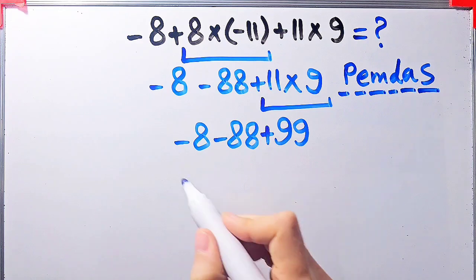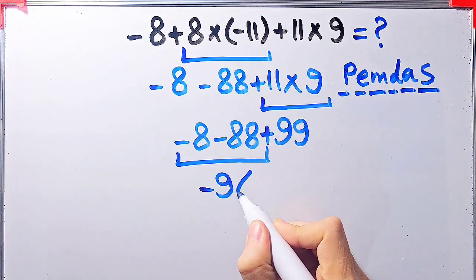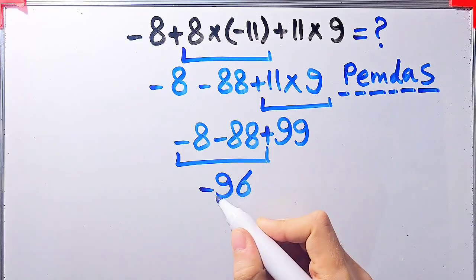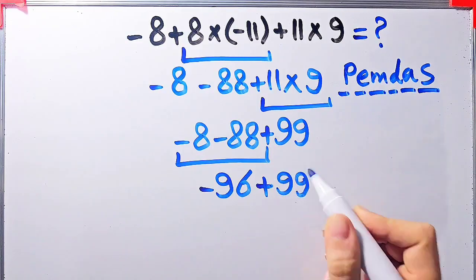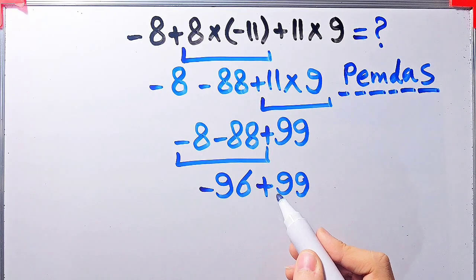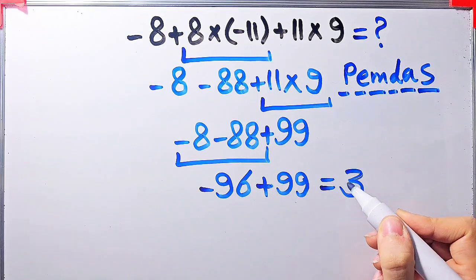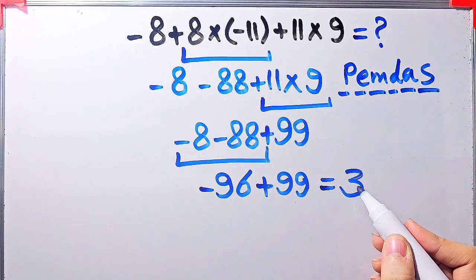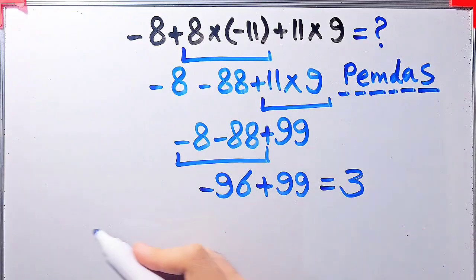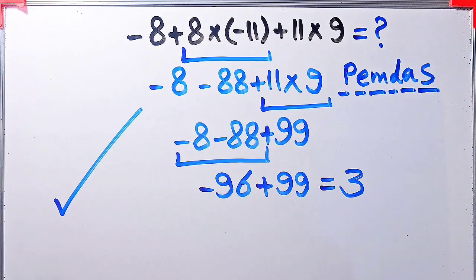Now we have negative 8 minus 88 plus 99. Negative 8 minus 88 equals negative 96. Now we have negative 96 plus 99. Negative 96 plus 99 equals 3. The final answer of this question equals 3. Thanks for watching — please subscribe to the channel and leave a comment. Goodbye.